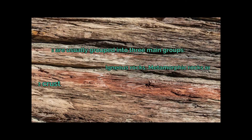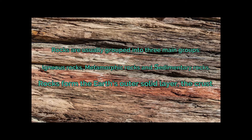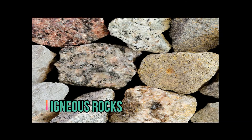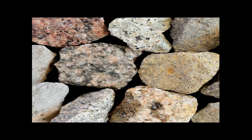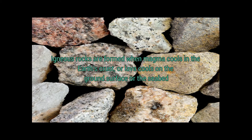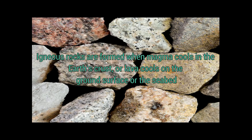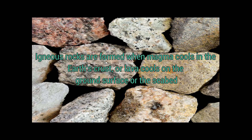Rocks are usually grouped into three main groups: igneous rocks, metamorphic rocks, and sedimentary rocks. Rocks form the earth's outer solid layer, the crust. Igneous rocks are formed when magma cools in the earth's crust, or lava cools on the ground surface or the sea bed.